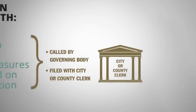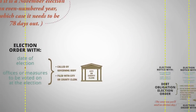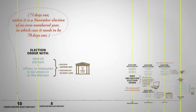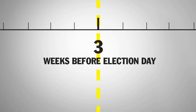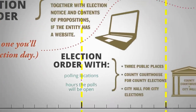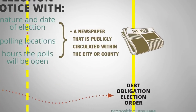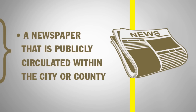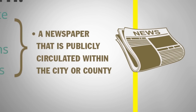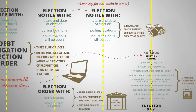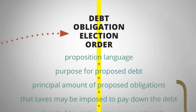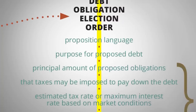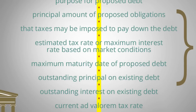To sum up, for bond elections ordered on or after September 1, 2013, governing bodies must start making bond election information available to you, the taxpayer, beginning three weeks before election day. At least two weeks before election day, they must publish an election notice in the newspaper and in three public places. And on election day, the governing body must provide specific details at each polling place, including the proposition language, the purpose of the proposed debt, and outstanding principal and interest on existing debt.